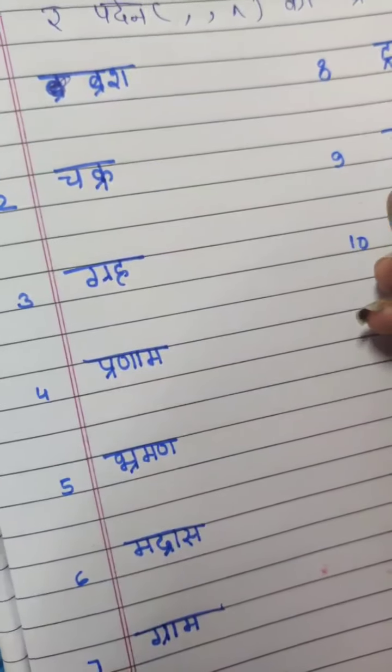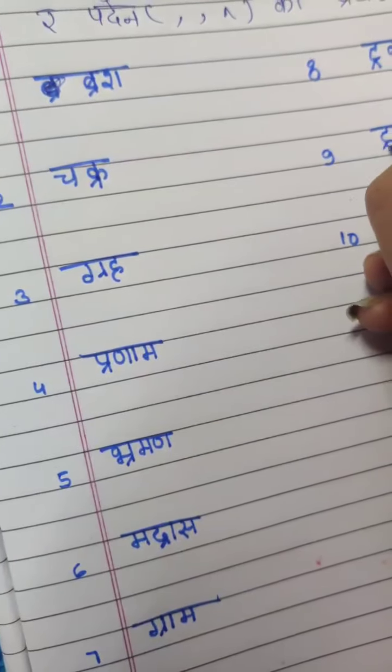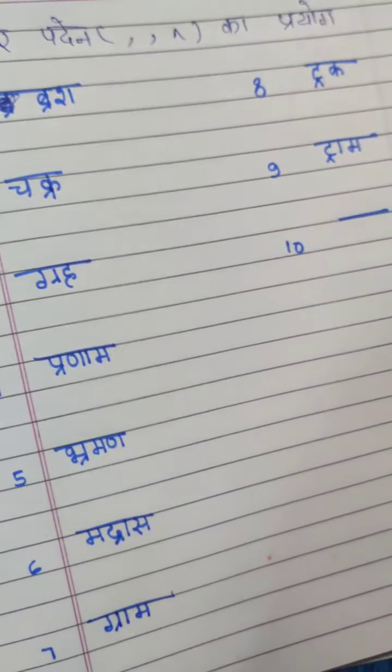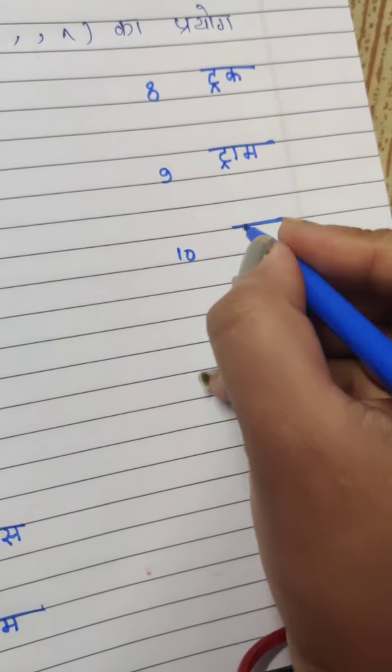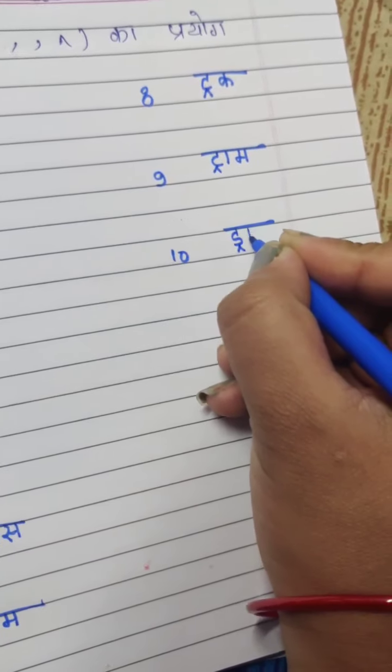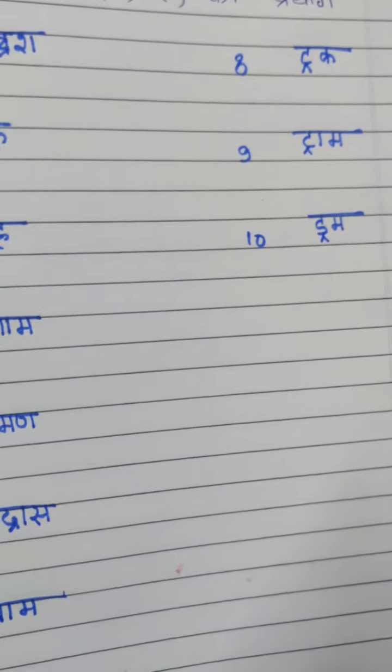And the ninth one, T, Aaki matra and Padeen ki matra and Ma, this is Tram. And the last one, D, Padeen ki matra and Ma, this became Drum.